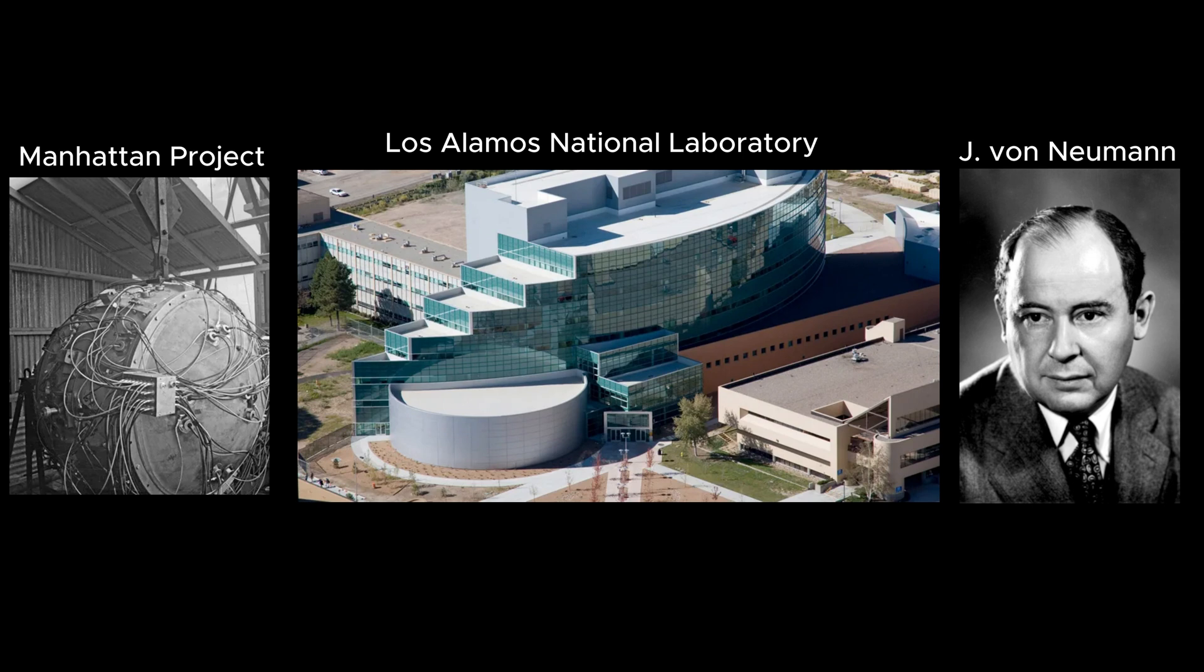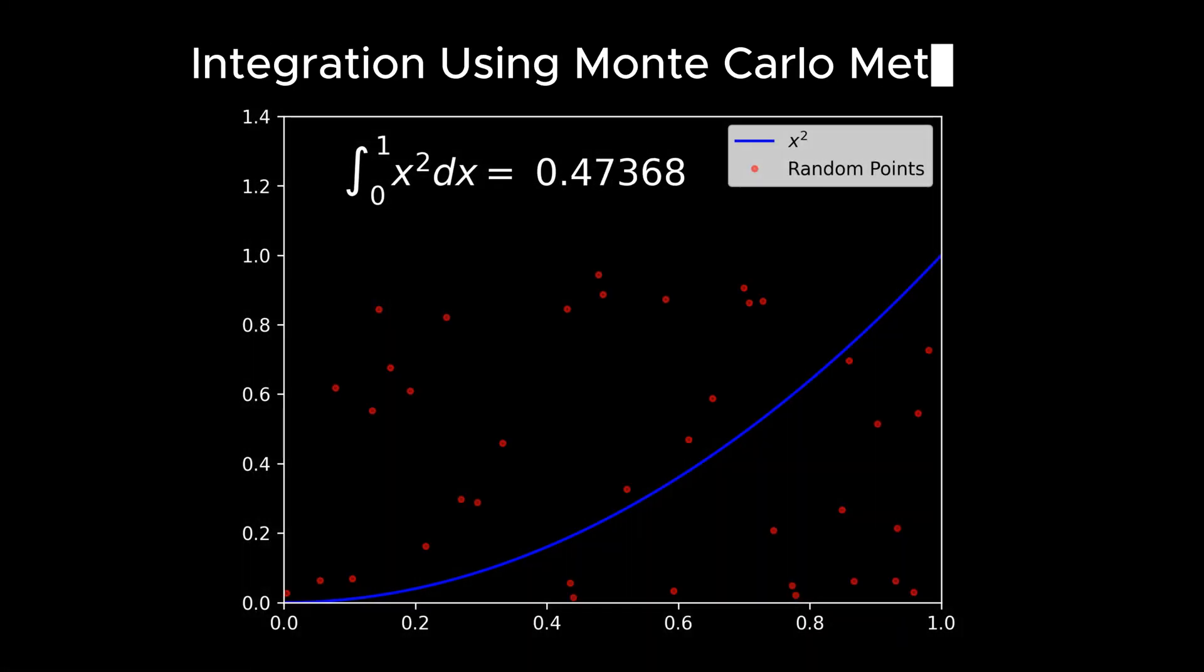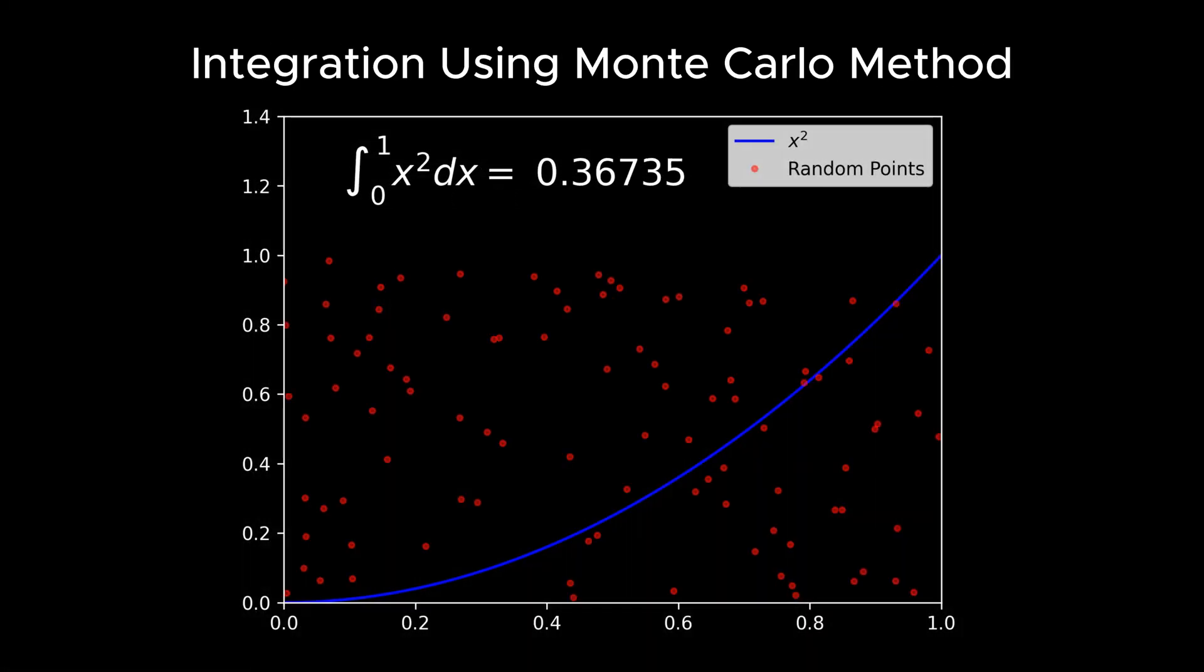Von Neumann immediately recognized the potential of using random sampling techniques to tackle intricate mathematical problems, particularly those related to nuclear physics, where traditional methods often failed.